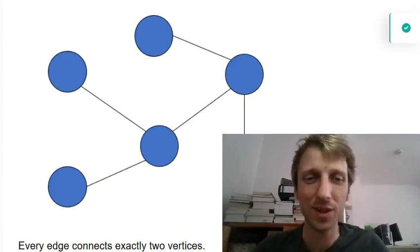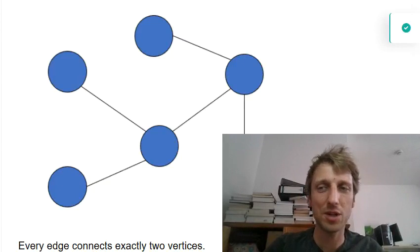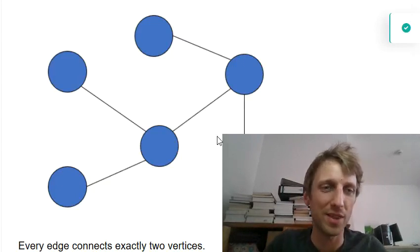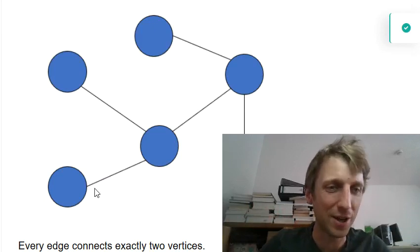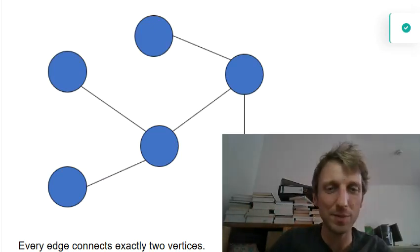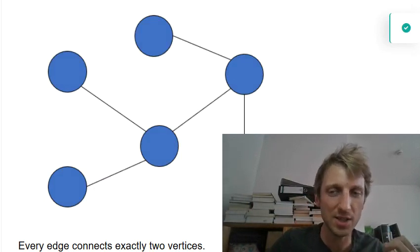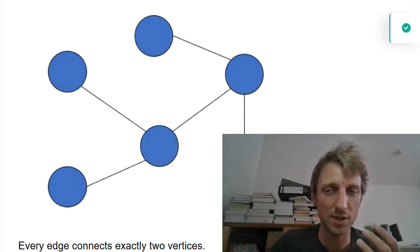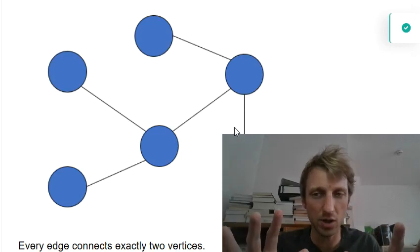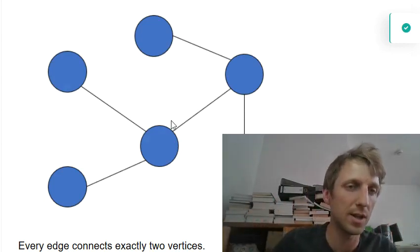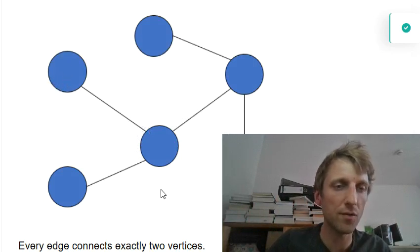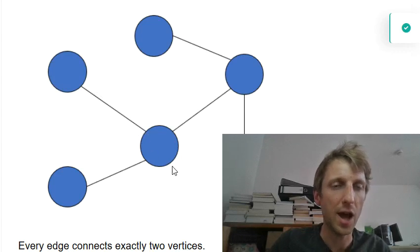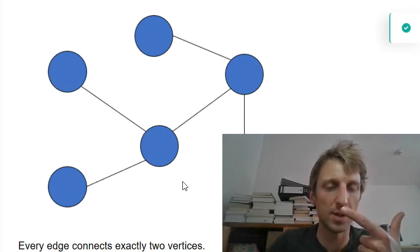Welcome to this tutorial where I want to show you how to generate a random graph with Python. First things first — what is a graph? According to the Merriam-Webster dictionary, a graph is a collection of vertices and edges that join pairs of vertices. You have the vertices — like a blue dot — and the edges, a black line, and each edge connects two vertices.